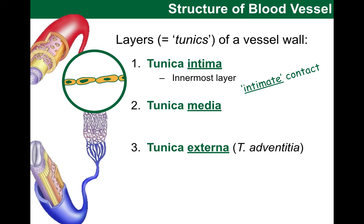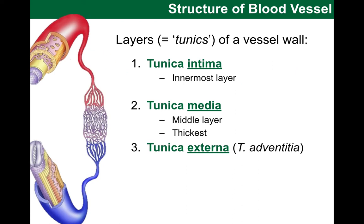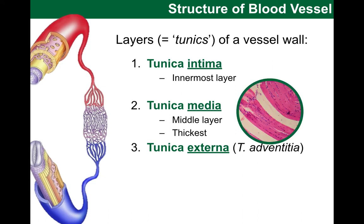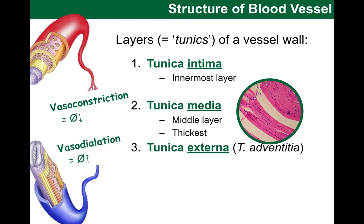The next layer is tunica media, the middle layer. Its wall is made largely of smooth muscle and elastin, which tells us about its function. The smooth muscle layer around the blood vessels allows us to control the vessel diameter through contracting or dilating. These processes are known as vasoconstriction, where the vessel diameter decreases as the smooth muscle constricts, and vasodilation, where the diameter increases.